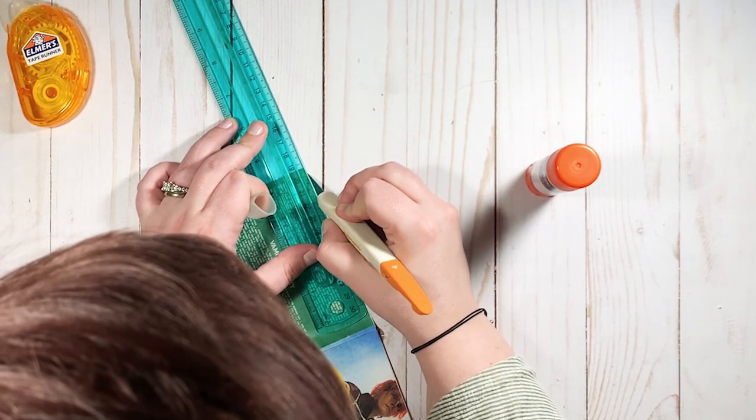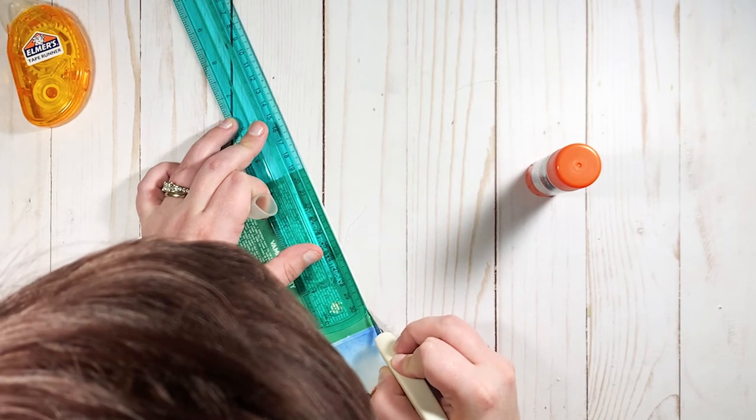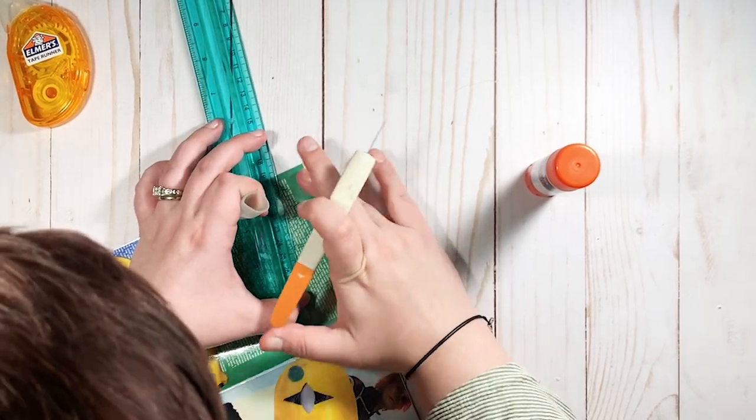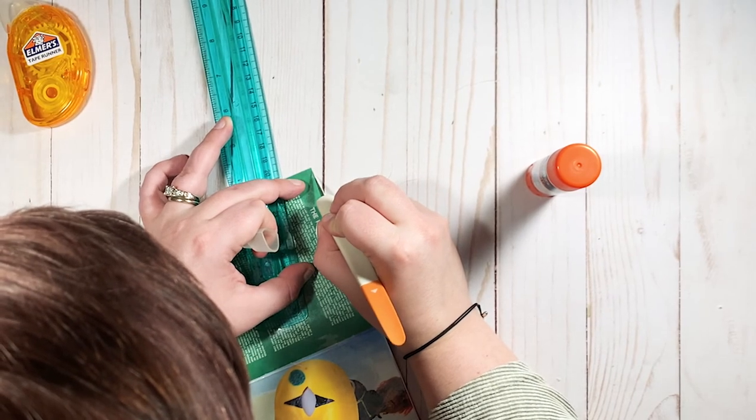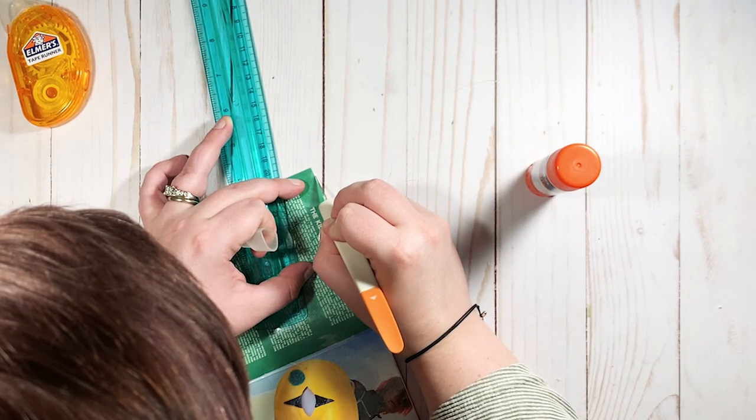I just went in and trimmed that down a little bit with an exacto knife. It's not the biggest deal—it doesn't really bother me too much—but I just wanted to kind of get that excess paper off right there on the top.